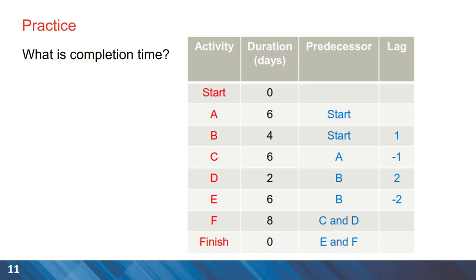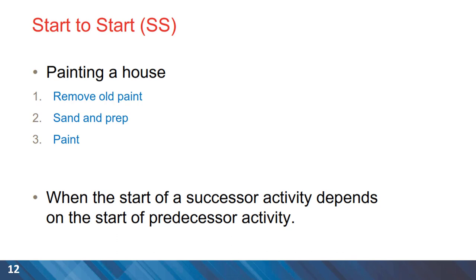Now that we have talked about Gantt charts, we can start our discussion about activity relationships. And one of the important relationships that we can consider is a start to start. Here is an example for painting a house. We need to remove the old paint as the first activity, then sanding and preparation of the surfaces as the second activities. And the third one is painting itself.